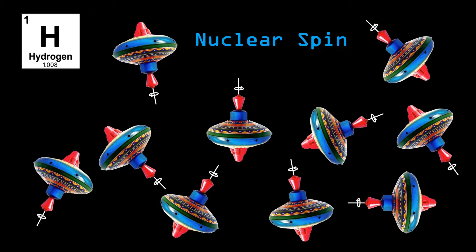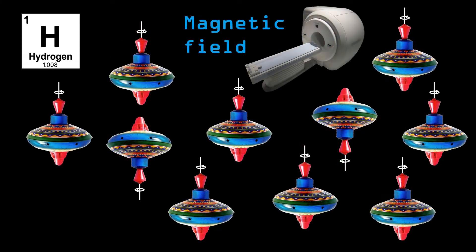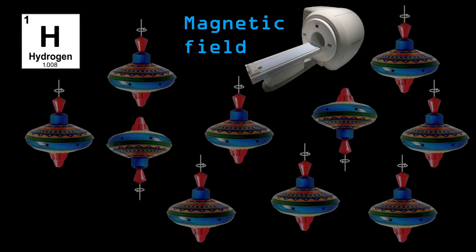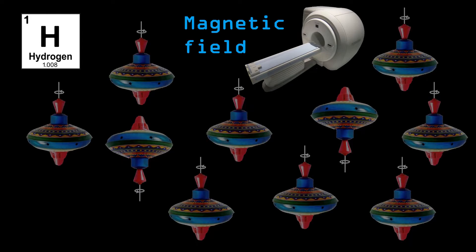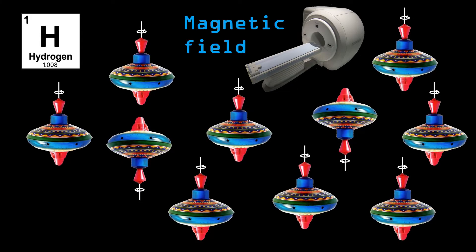Interestingly, in a large magnetic field, such as in an MRI scanner, all protons start to line up. Most protons line up in the same direction as the magnetic field, in other words in the parallel direction, but some others line up in the opposite direction of the magnetic field, in the so-called anti-parallel direction.